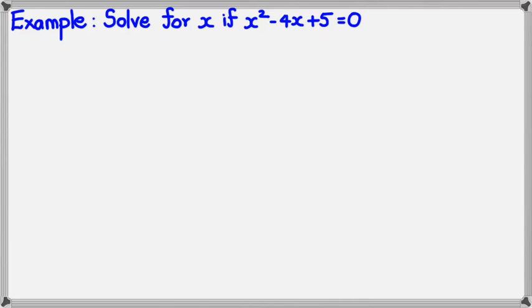So here's an example. I want to solve for x if x squared minus 4x plus 5 equals 0. So I have x squared minus 4x plus 5 equals 0, which means a is equal to 1, b is equal to negative 4, and c is equal to positive 5.